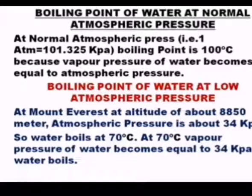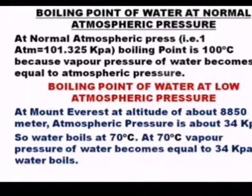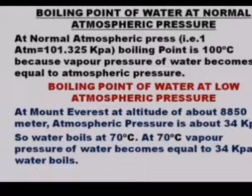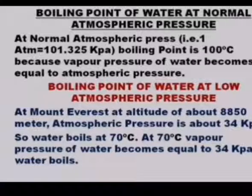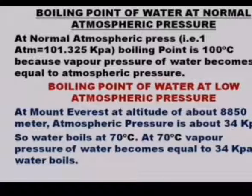At Mount Everest, water boils at 70 degrees Celsius because the vapor pressure becomes equal to 34 kilopascals at that temperature. Comparing the two: at sea level the pressure is 101,325 kPa and boiling point is 100°C; at Mount Everest pressure drops to 34 kPa and boiling point drops to 70°C. This shows that lower atmospheric pressure means a lower boiling point.